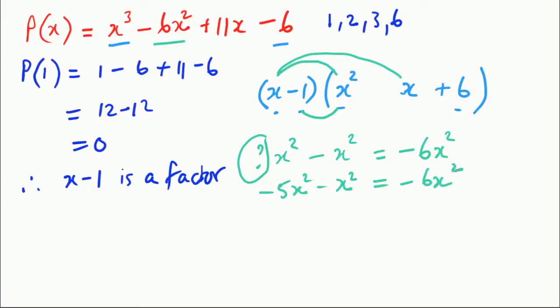So what that means is that when we multiply these two together we must get minus 5 x squared. So we're timesing x by something to equal minus 5 x squared and the answer to that would be minus 5 x.